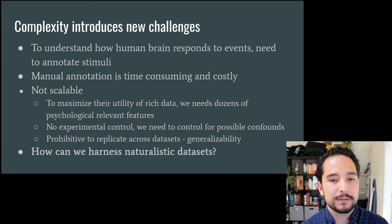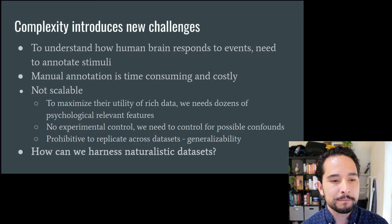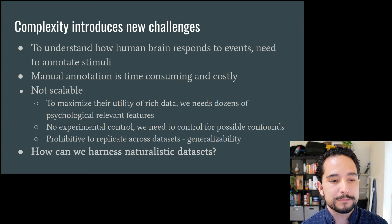If we really want to maximize the utility of these datasets, we need dozens if not more of psychologically relevant features. These naturalistic stimuli are a far cry from experimental designs — we don't have experimental control, so we need to worry about confounds and control for as many things as possible, which can require dozens or more regressors. To gain confidence and generalize findings, we'd want to replicate across datasets, which is really hard.